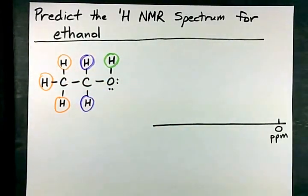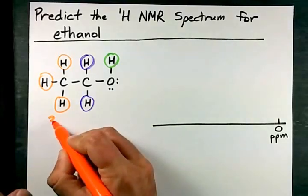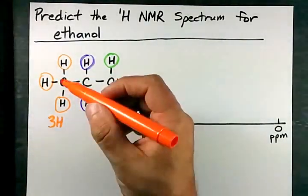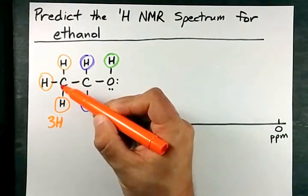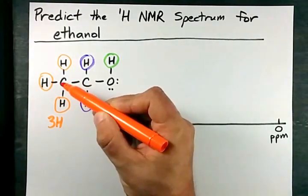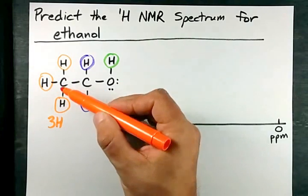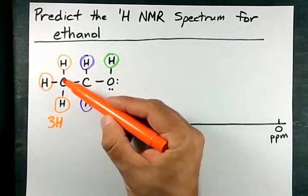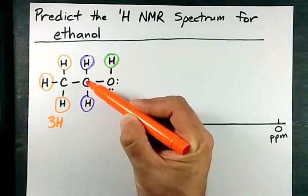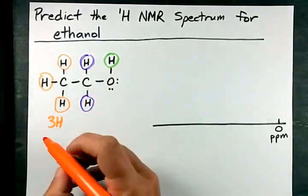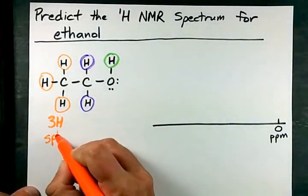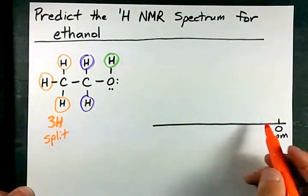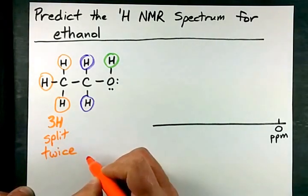So what we have here is three hydrogens all connected to the same carbon. Now how many hydrogens are on the carbon adjacent to this one? The answer is two of them, because this is the carbon they're attached to. The carbon beside it has two H's on it. So the peak created by these three hydrogens in the NMR spectrum is split twice.